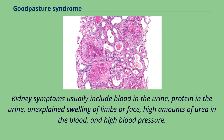Kidney symptoms usually include blood in the urine, protein in the urine, unexplained swelling of limbs or face, high amounts of urea in the blood, and high blood pressure.